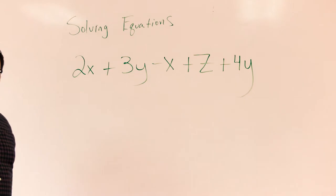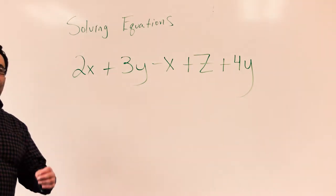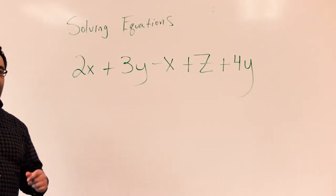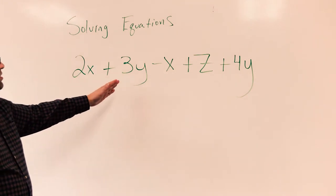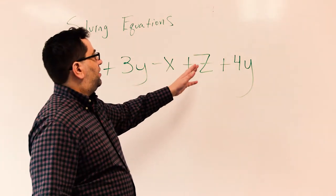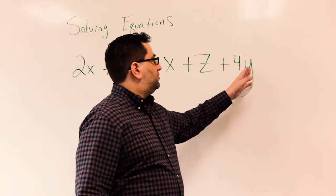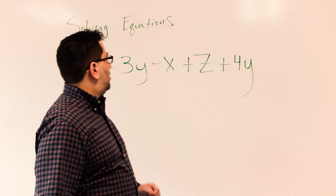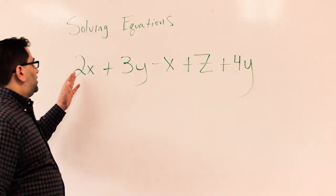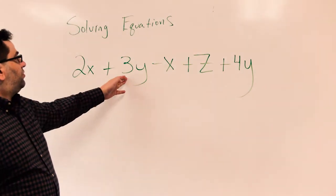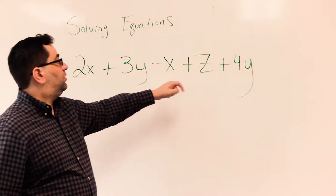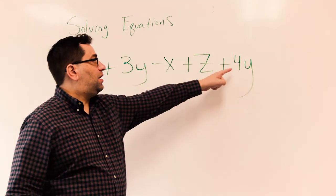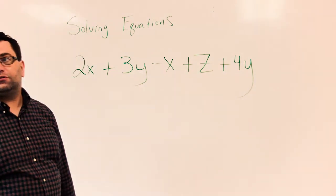When I say combining like terms, we're looking at the variables. The variables in an equation are the letters. The numbers in the equation — 2, 3, 1, 1, and 4 — are called the coefficients.